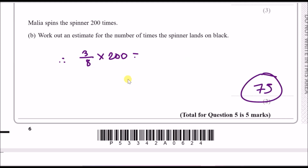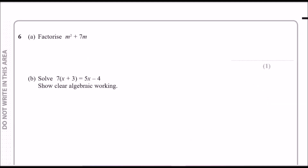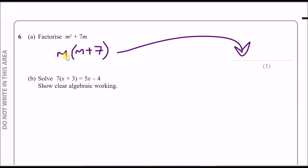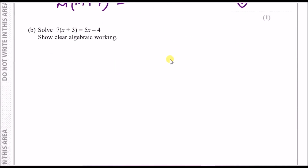Number six, part a: factorise m² + 7m. Both terms share a common factor of m, so divide both through by m: m(m + 7). That's your answer.